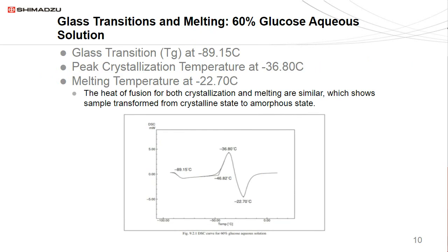One of the most common uses for DSC is measuring the glass transition and melting. For this example we have a 60% glucose aqueous solution. The glass transition temperature, or Tg, is the inflection point at the beginning of a thermogram, measuring around minus 89°C. Followed by that is the peak crystallization temperature — an exothermic reaction occurring around minus 36°C. Immediately after that is the melting stage, at a melting temperature of minus 22.7°C. The fact that the heat of fusion of both crystallization and melting are similar and close to each other shows a very quick sample transformation from a crystalline state to an amorphous state.